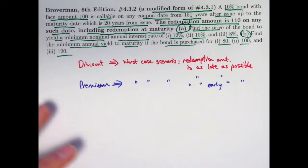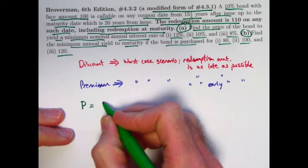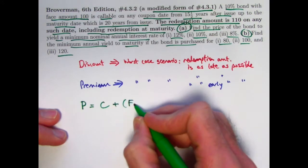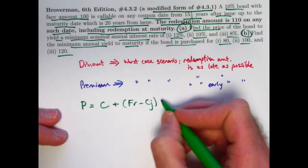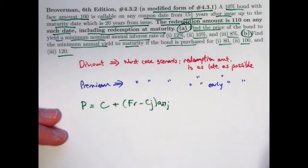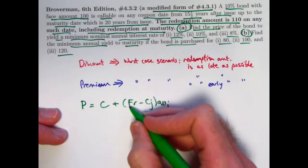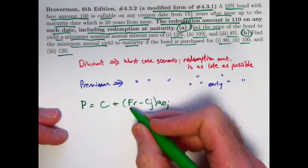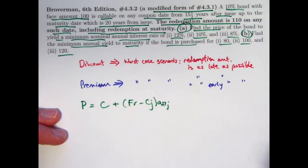So once again, we can use the premium discount formula. In its most general form, how people usually write it initially is p, the price, is the redemption value, c, plus, in parentheses, f times r is the coupon amount, minus c times j, where j is the effective semi-annual yield rate, times a n j. And when f equals c, oftentimes people go ahead and replace f by c and factor the c out of here. But that would only be replace by just c and c times r if the redemption value is the same as the face value.